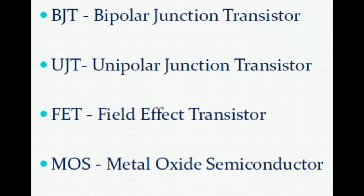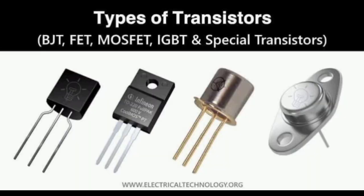There are different types of transistors: BJT — Bipolar Junction Transistor, UJT — Unipolar Junction Transistor, FET — Field Effect Transistor, MOSFET — Metal Oxide Semiconductor Field Effect Transistor, and IGBT — Insulated Gate Bipolar Transistor.